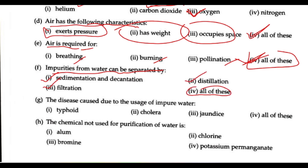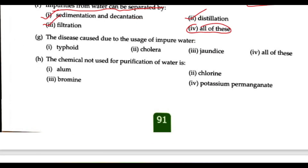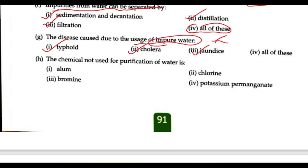Next concept: diseases can be caused due to usage of impure water. When we use impure water, the diseases that can occur include typhoid, cholera, and jaundice. So all of these are the answers.